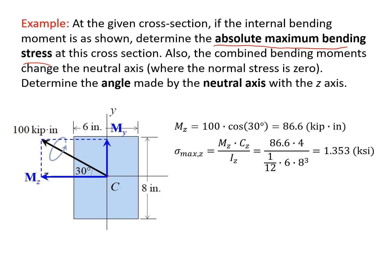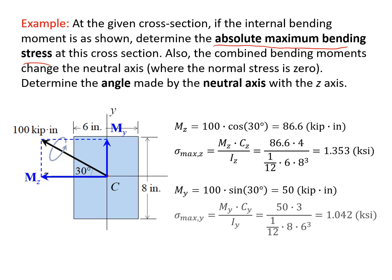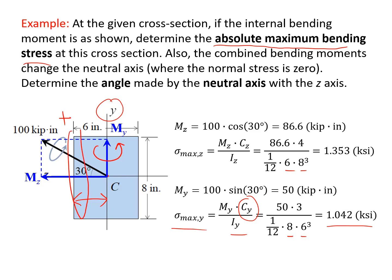We can also calculate My using trigonometry — My is 50 kip·inch. From the flexure formula again, we calculate the maximum bending stress caused by My. Here cy is the maximum distance of 3 inches, which is half of 6 inches, divided by Iy, the area moment of inertia about the y-axis — note that the width and height have switched from before. Because of the direction of My, it creates a counterclockwise bending effect about the y-direction, so it is tensile on the left edge, compressive on the right edge, and zero along the y-axis.